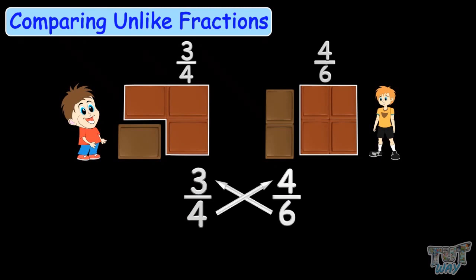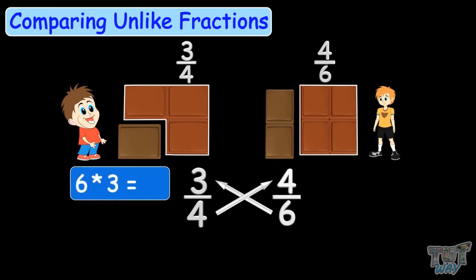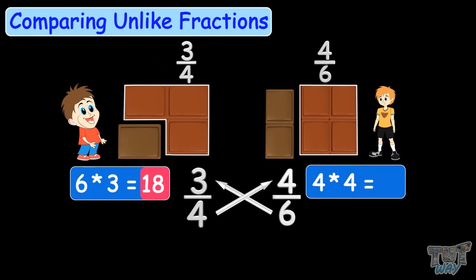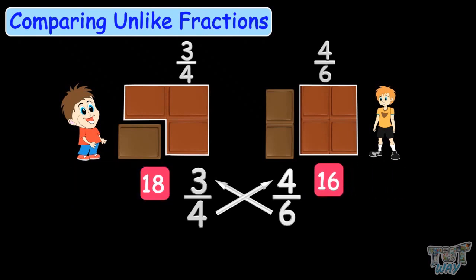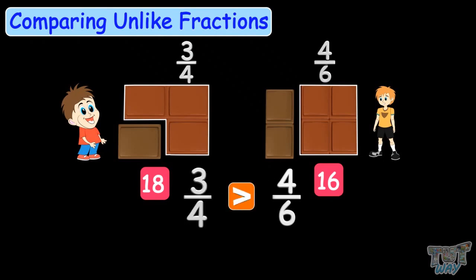Multiply 6 by 3 and write the product here. Multiply 4 by 4 and write the product here. You get the bigger product, that is 18, on this side — that is 3 by 4. So this fraction is bigger: 3 by 4 is bigger than 4 by 6.